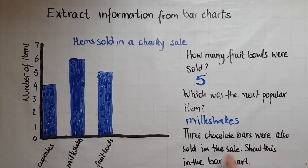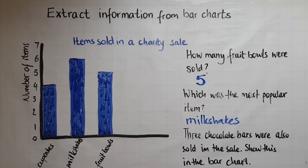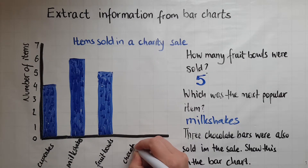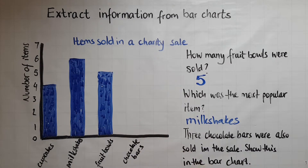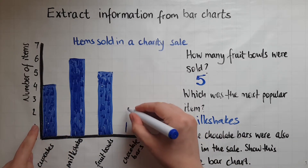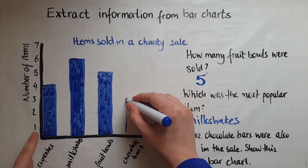Three chocolate bars were also sold in the sale. Show this on the bar chart. So we haven't got chocolate bars yet and we'll need to add it here. So we've got chocolate bars and there were three of them, so we'll go up one, two, three.